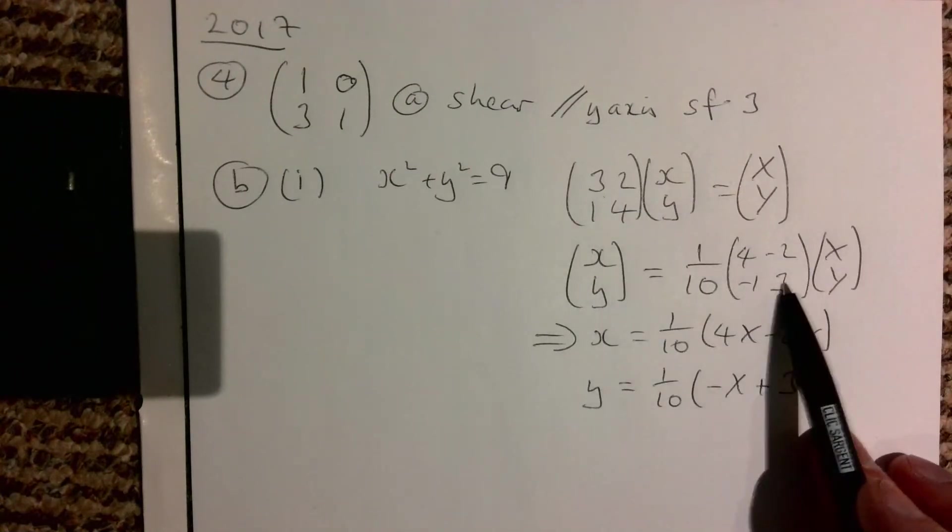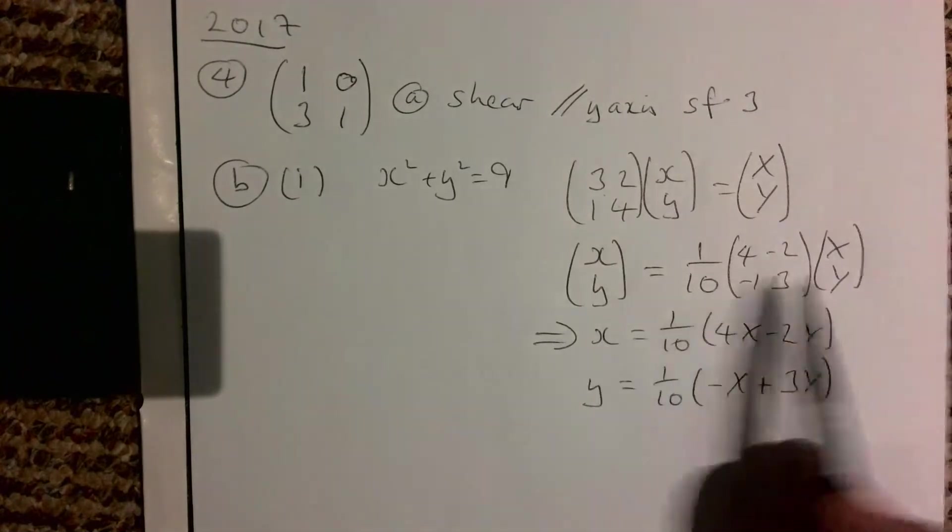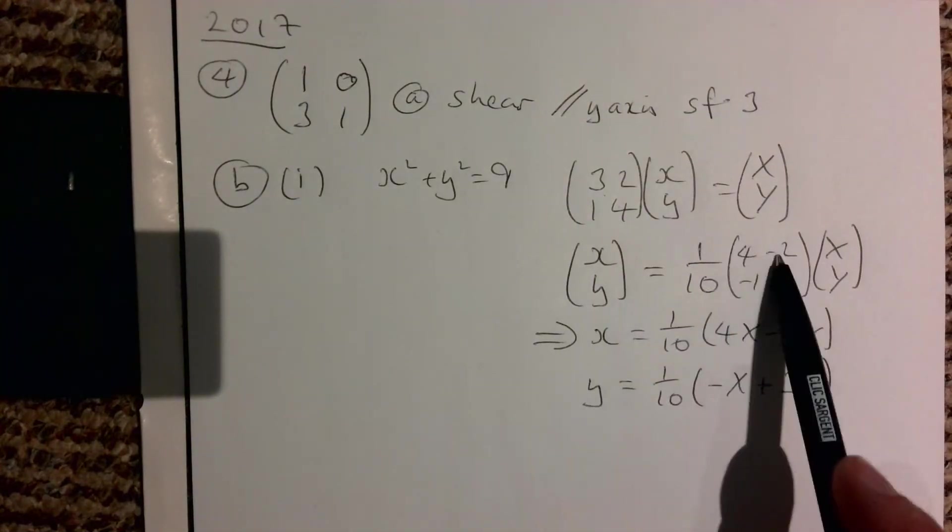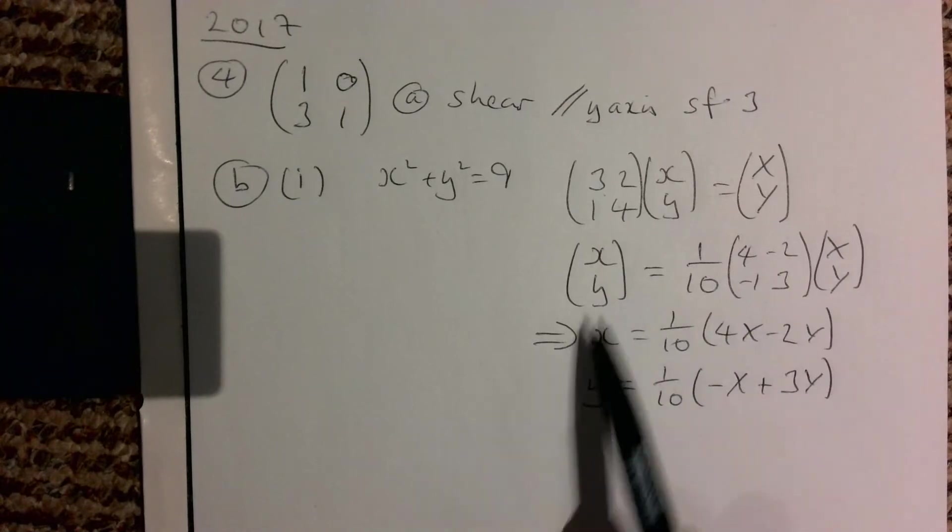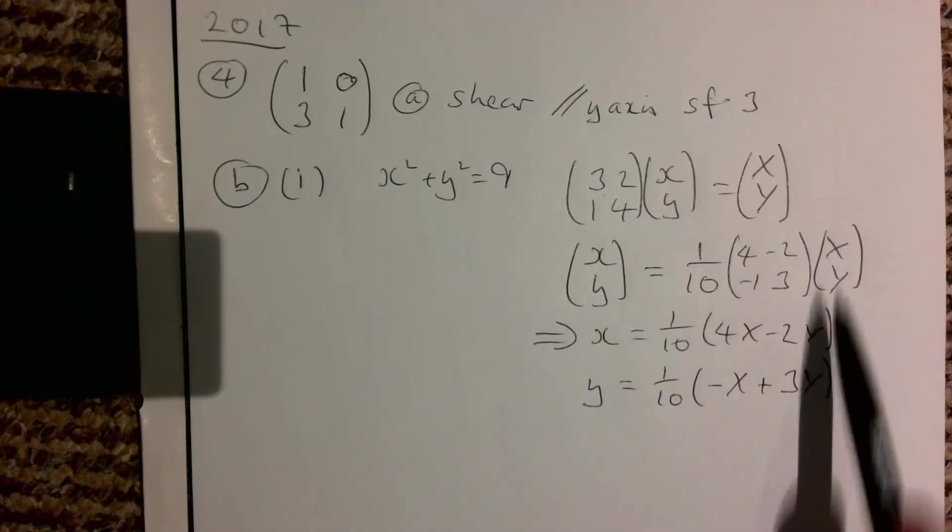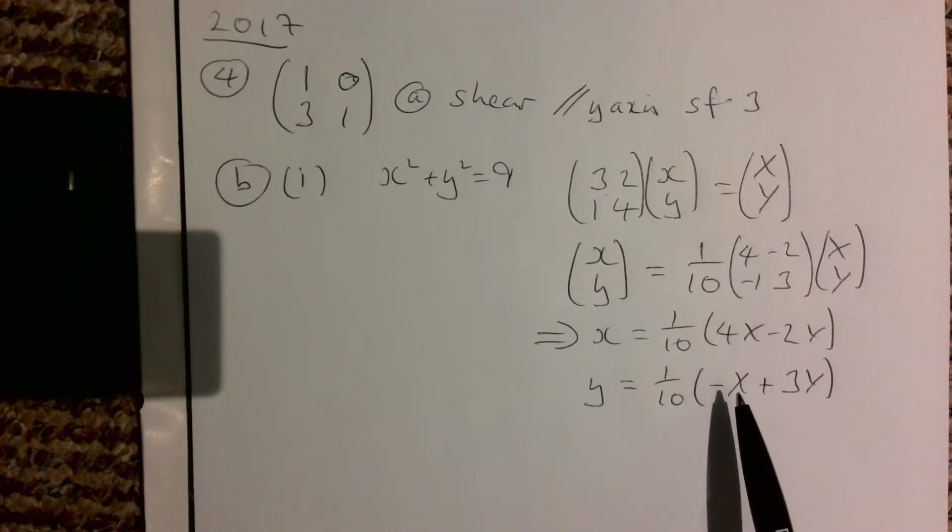Upon (big X, big Y). And that means our x must be 1/10 (4 big X - 2 big Y), and it means that y must be 1/10 (-X + 3Y).